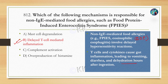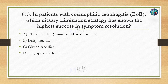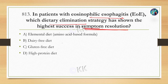In a patient with eosinophilic esophagitis, which dietary elimination strategy has shown the highest success in symptom resolution? Option A: elemental diet, Option B: dairy-free diet, Option C: gluten-free diet, Option D: high protein diet.